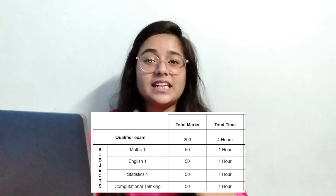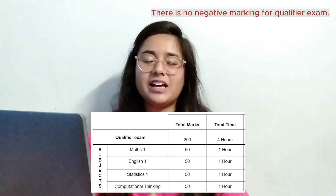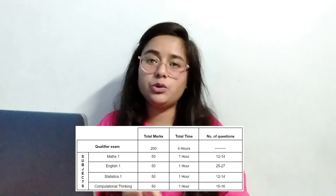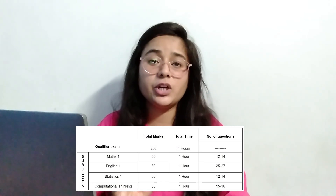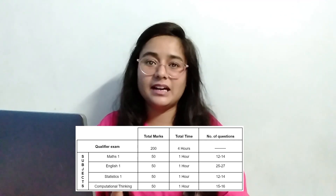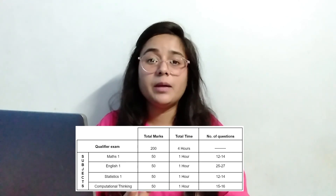This is a question paper for your 4 subjects with a distributed marks structure, and there is no negative marking. In Maths, you have around 15–14 questions. In English, you have 25–27 questions. In CT, 15–16 questions. And in Statistics, again, 12–14 questions. Because Maths and Stats are tougher, their questions are fewer but carry more marks. So please give a little extra attention to Maths and Stats. For English, there are about 25 questions, and since those tend to be easier, you can solve them quickly and use saved time for Maths and Stats.